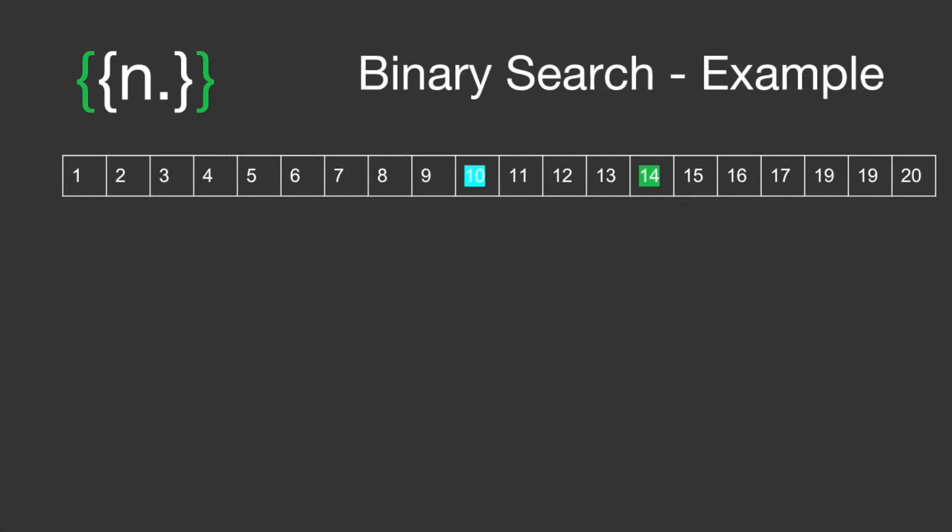So here's an example of binary search. We're looking for number 14 again. We're going to start with number 10. Since we know 10 is less than 14 that half of the list can now be discarded.